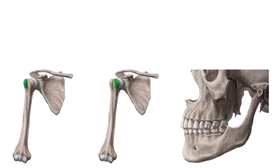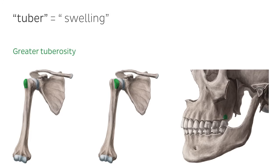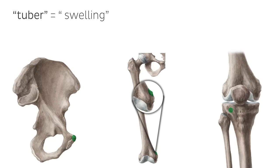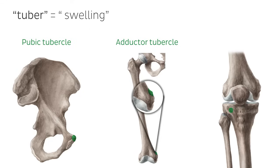Many structures are named from the root tuber, which is Latin for swelling. We have the greater tuberosity of the humerus and the lesser tuberosity of the humerus, the maxillary tuberosity, and the pubic tubercle. The adductor tubercle on the femur — remember that to adduct means to move towards the midline of the body, or to add to it, so it would be on the inner aspect of the bone — and Gerdy's tubercle, located on the lateral side of the tibia, named after a French surgeon.